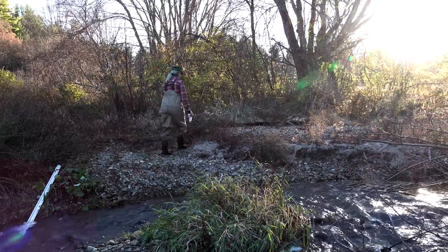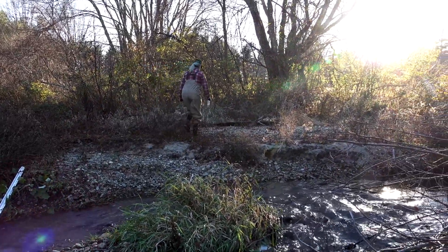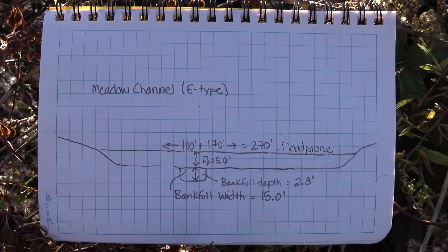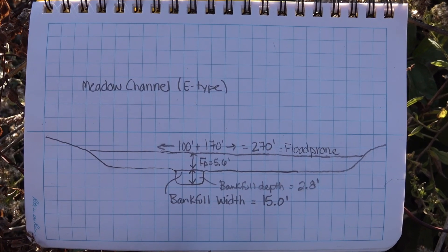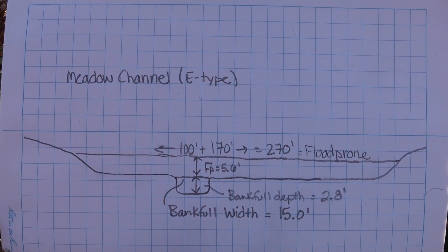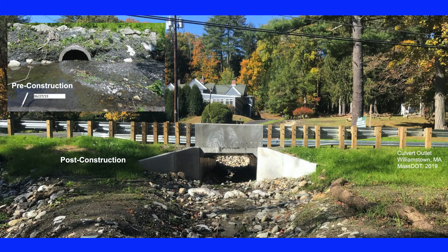We often document this in a field book by a simple sketch showing the bankful channel dimensions, the flood-prone width, and even up into the valley walls. This has really important ramifications for how you might design a bridge or culvert, where all that water that lands in the valley needs to funnel through the structure. These dimensions not only represent the river process, but are also really important for the proper design of resilient structures in the system.